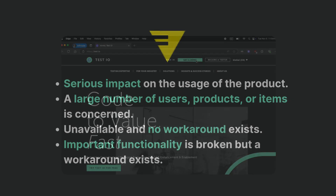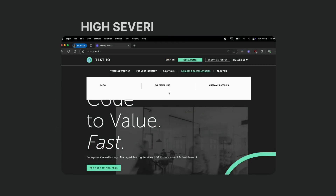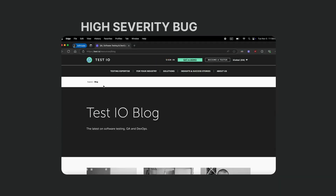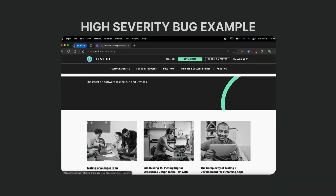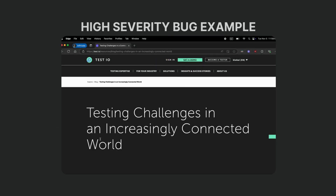High severity: serious usage impact though core features remain accessible, widespread user or product impact, essential features broken without straightforward solutions, and important functionality affected but with available workarounds.